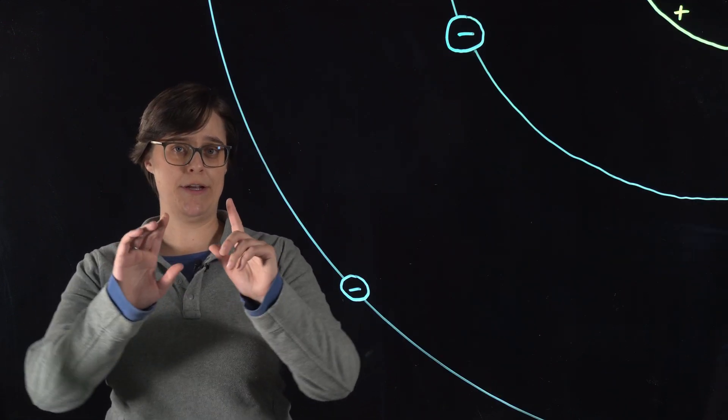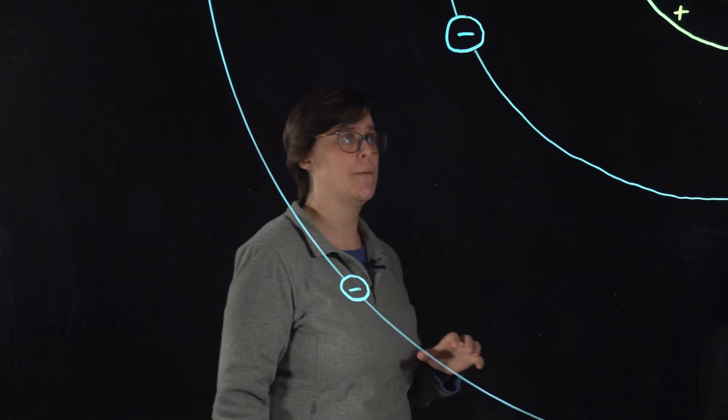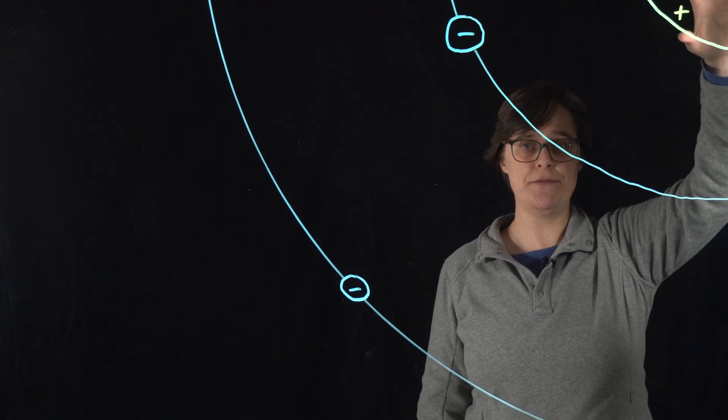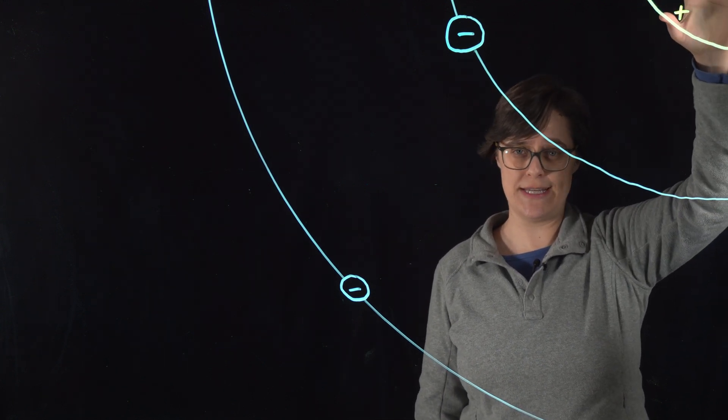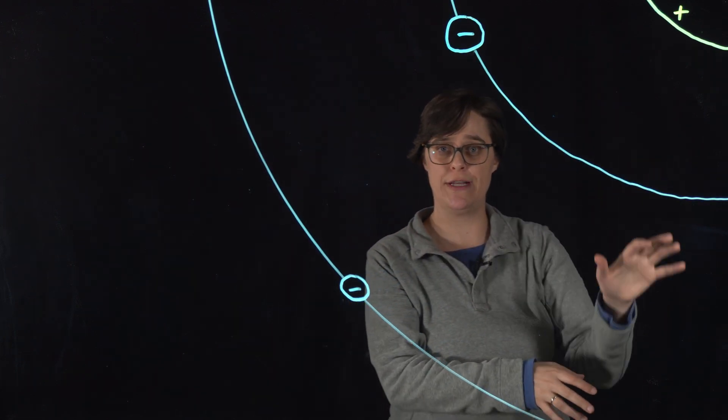In 1911, Ernest Rutherford proposed the planetary model of the atom. In this model, most of the mass and the positive charge is in a dense nucleus in the center, and electrons, which are negatively charged, are in orbit.